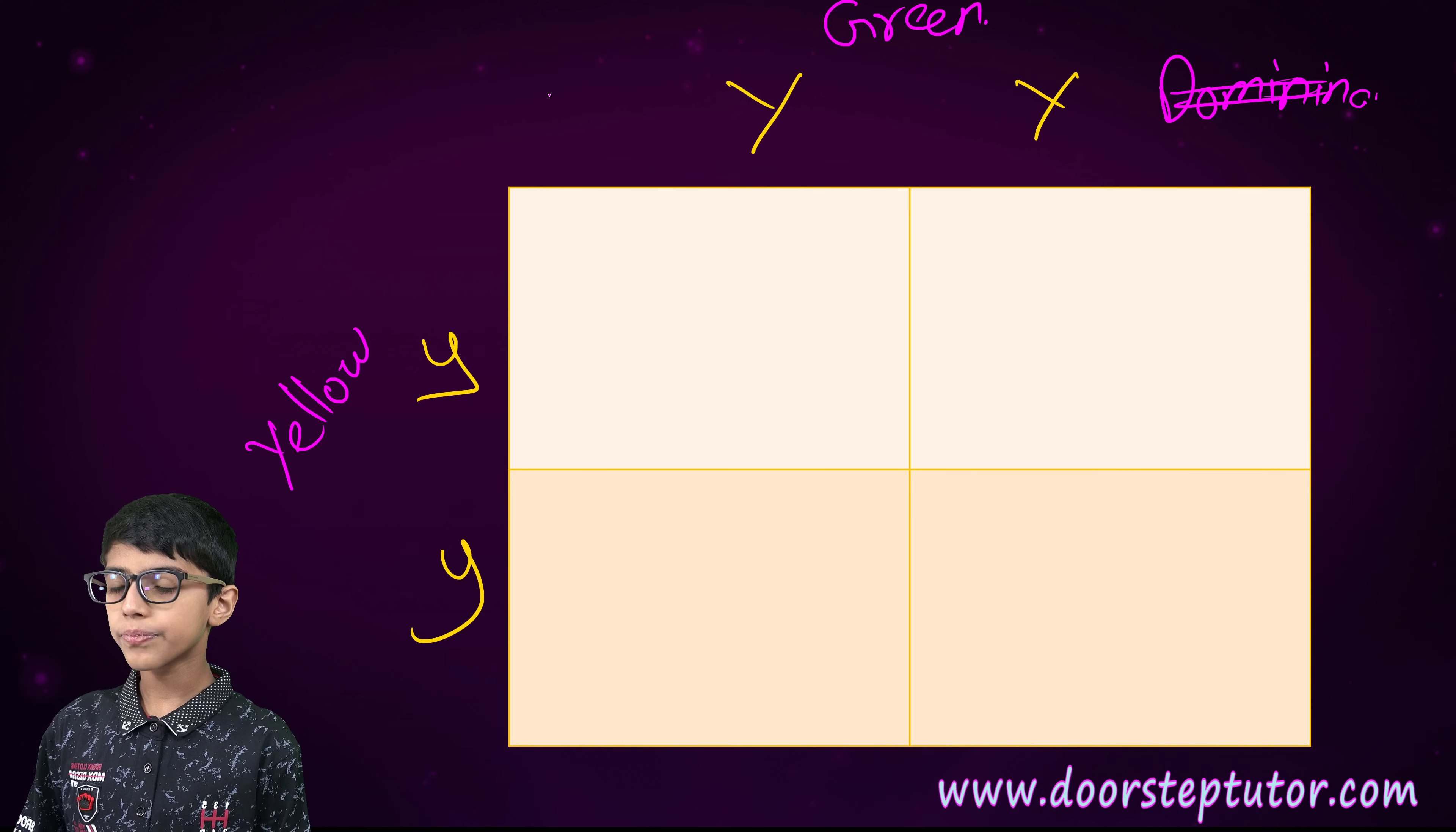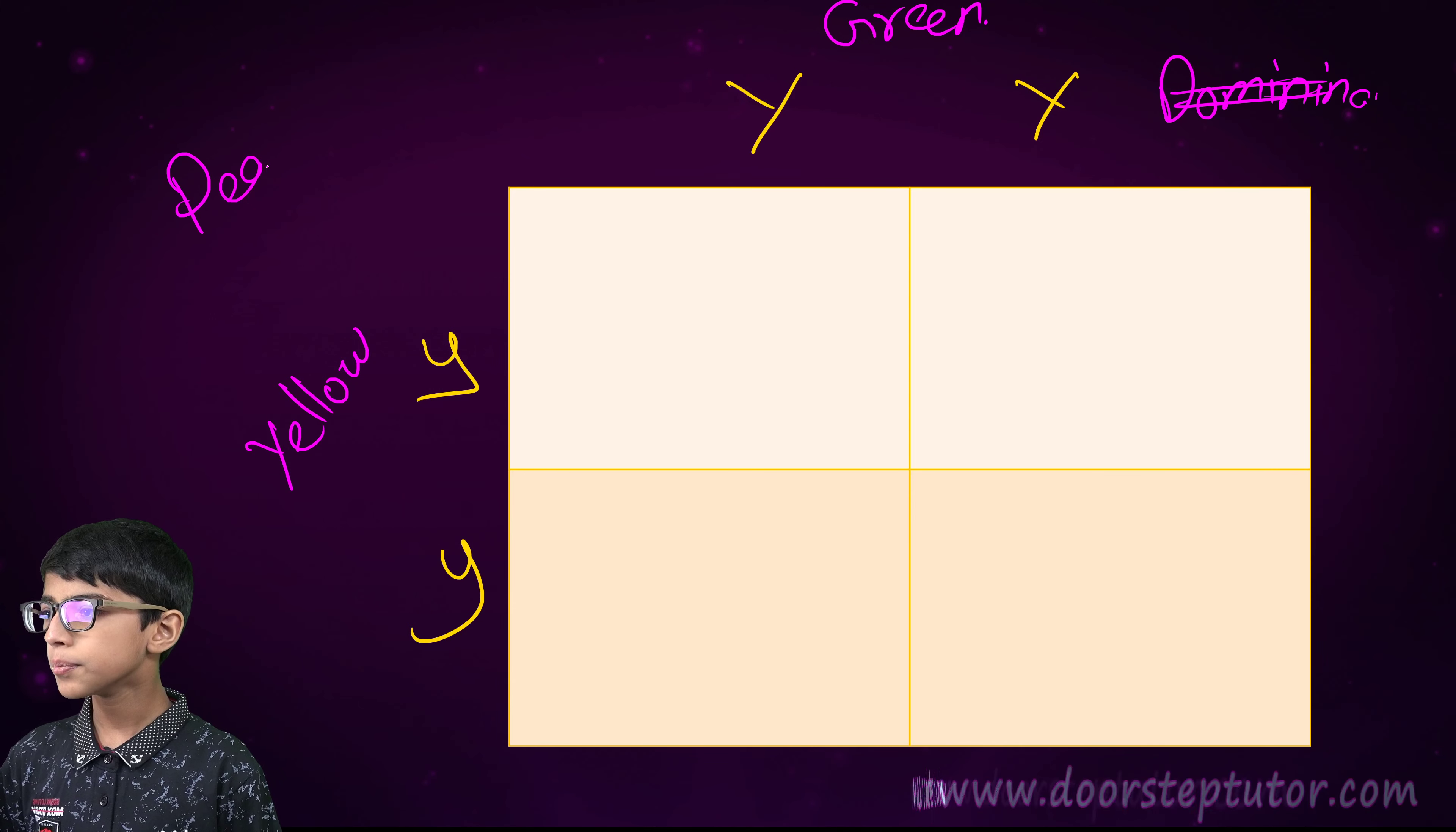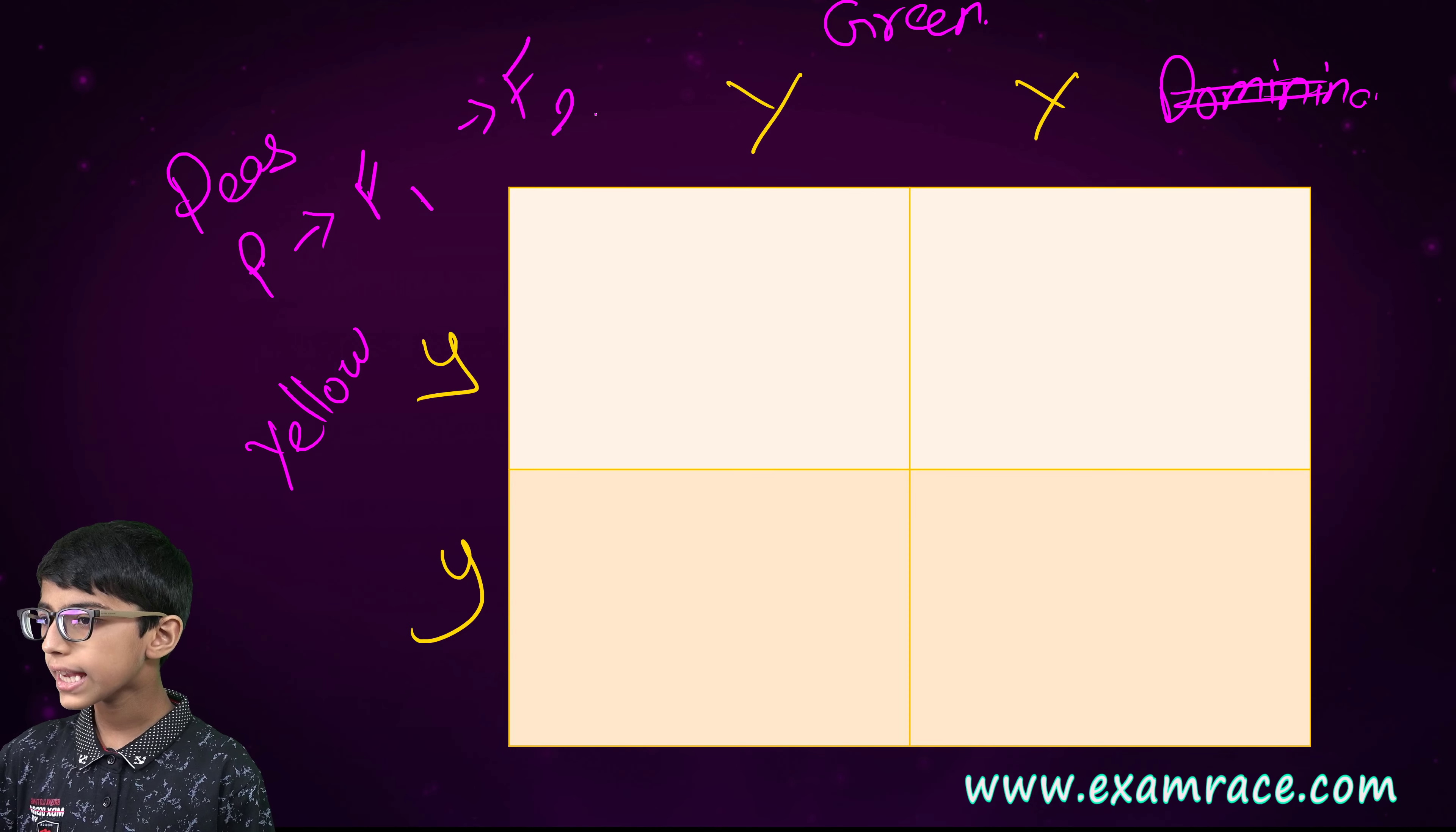Now, we will learn how to cross these. Before that, do you know these are the parent generations? These are green peas and these are yellow peas. Mendel did experiments with peas. From parent generation, we get the F1 generation. Parent generation is this what I have drawn. And F1 generation is the next generation. And then we have the F2 generation.